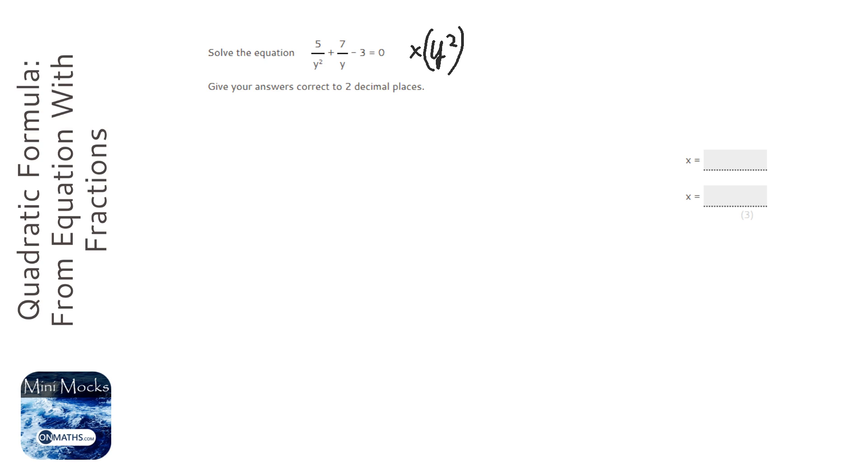So just multiply literally everything in the equation by y squared. So 5 over y squared times y squared just leaves 5. And here we've got 7, and in fact I'm going to write this as a fraction still so we can see it a little bit clearer. So we've multiplied that by y squared, but we've not really dealt with it yet. And we've got minus 3y squared equals 0.